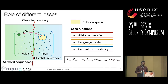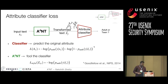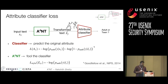This forms our final loss function, which is a weighted combination of these three. Let's look in a bit more detail at how these three loss functions are implemented. In order to transfer the style, ANT is adversarially trained against an attribute classifier in a generative adversarial network framework.